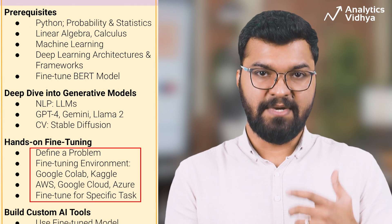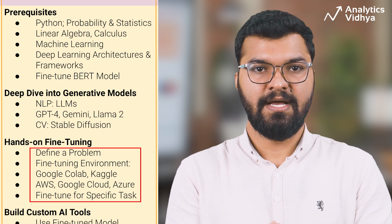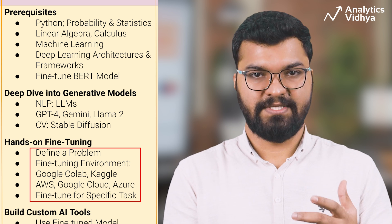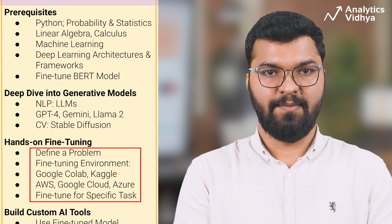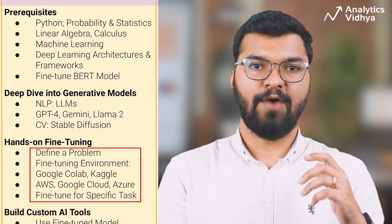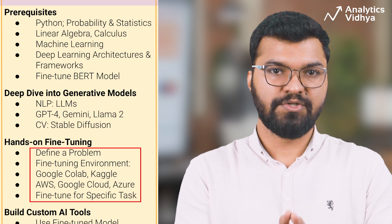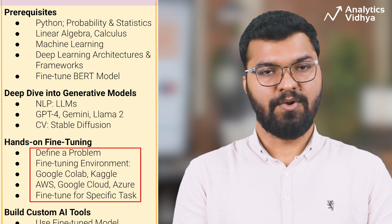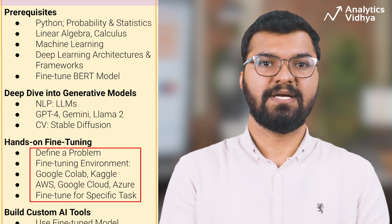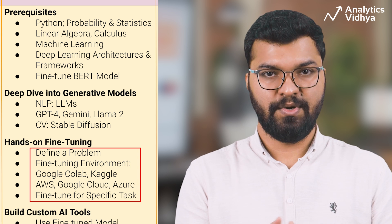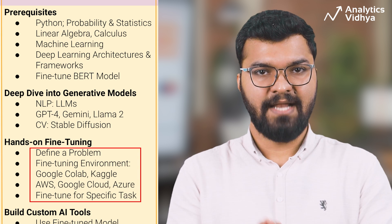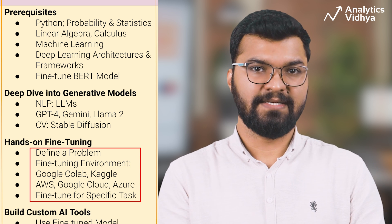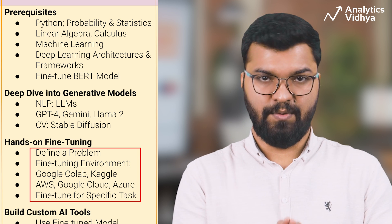For the hands-on part, define a specific problem or task you want to solve using fine-tuning. For LLMs, select a suitable foundation model — while GPT-4 or Gemini Pro are popular, open-source alternatives like LLaMA 2 or Falcon are good starting points. For computer vision, learn how to fine-tune diffusion models on custom datasets. Set up your fine-tuning environment using free platforms like Google Colab or Kaggle, or paid cloud services like Google Cloud, AWS, or Azure. Start the fine-tuning process, monitor training, adjust parameters using techniques like PEFT, and evaluate model performance.